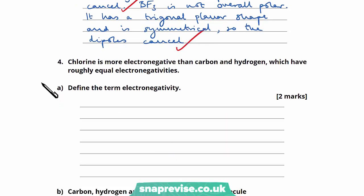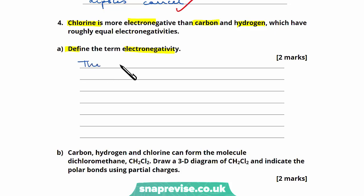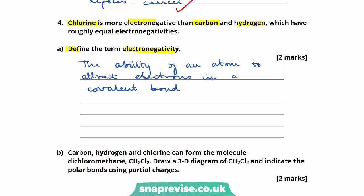Question four: define the term electronegativity. The definition is the ability of an atom to attract electrons in a covalent bond. This earns two marks. Definitions are an easy and quick way to gain marks, so it's important that you know them inside out.